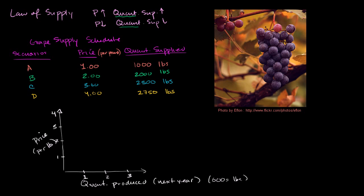So we can just plot these points, these are specific points on the supply curve. At $1, we would supply 1,000 pounds, that's scenario A. At $2, we would supply 2,000 pounds, that's scenario B.